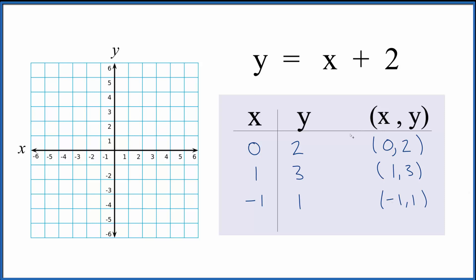So we have x is 0, then y is 2. We have x is 1 and y is 3. And then we have x is negative 1 and y is 1. And you can see we have our line there. If we kept putting points in, they would all fall along the line.